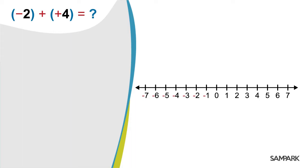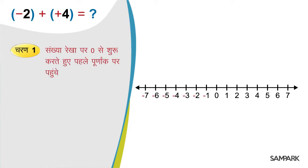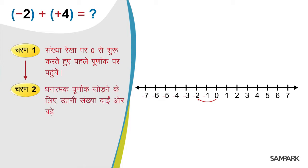Poonankkon ko darshane ke liye hum niche diye charNon ka palan karte hain. Charan ek: Sankhya Rekha par 0 se shuru karte hue pehle Poonank par pahunchte hain. Yahan pehla Poonank hai minus 2, to 0 se do kadam baayin or chalte hain. Uske baad Dhanatmak Poonank jodna hai — Dhanatmak Poonank hote hain 0 se daain or. To doosre charan mein pehli sankhya se utni sankhya daain or badhenge. Chunki hamein minus 2 mein 4 jodna hai, jo ek Dhanatmak Poonank hai, to minus 2 se chaar sankhya daain or badhte hain: minus 2 se minus 1, minus 1 se 0, 0 se 1, aur 1 se 2 par aa gaye. To minus 2 plus 4 hua 2.